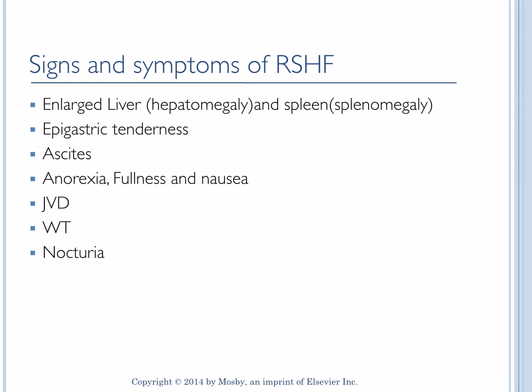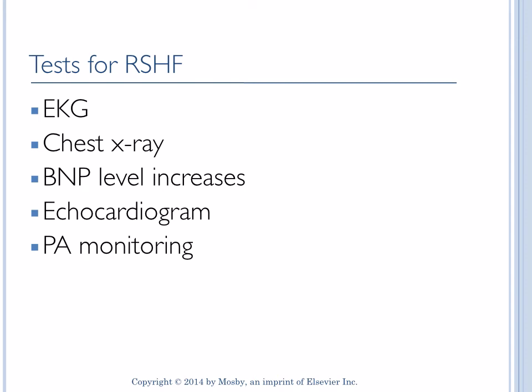The tests for right-sided heart failure are no different from those for left-sided heart failure. We will do an EKG, which will show heart strain, any enlargement, or ischemia. Chest X-ray will reveal any lung infiltrates or an enlarged heart. BNP will be increased in both left- and right-sided heart failure. Echocardiogram will evaluate the pumping ability of the heart and function of the heart valves. We will also do pulmonary artery pressure monitoring, which will show high pulmonary artery wedge pressure.